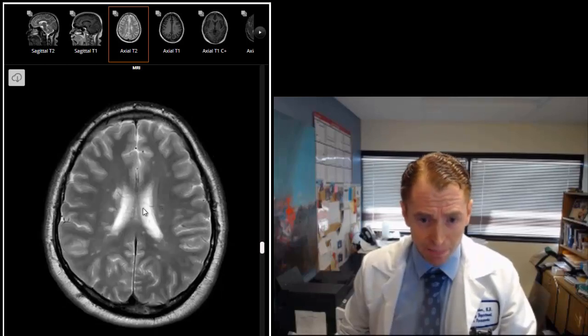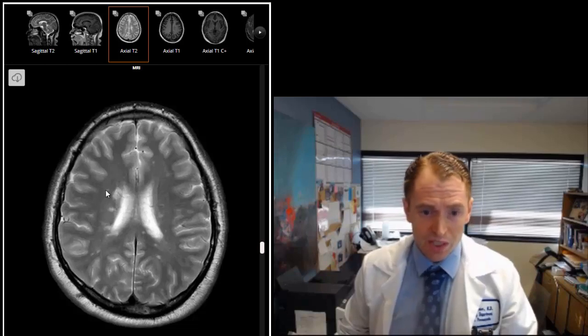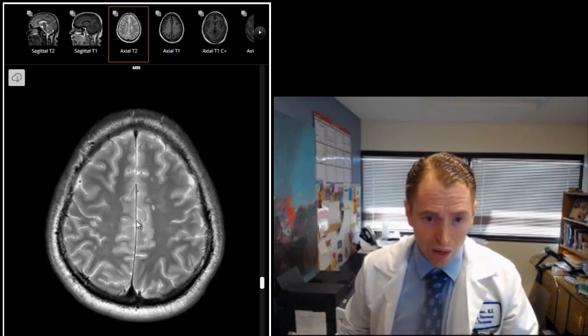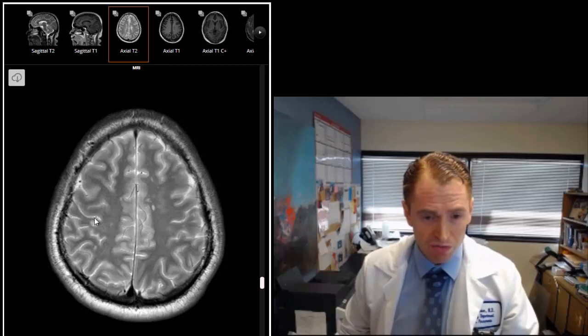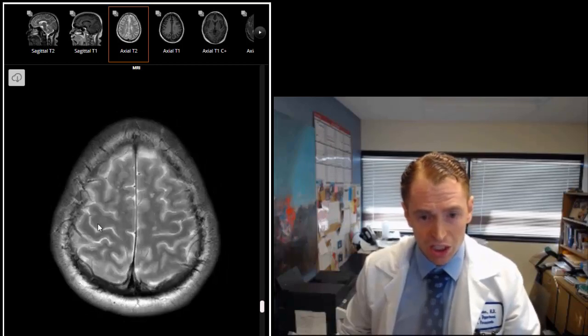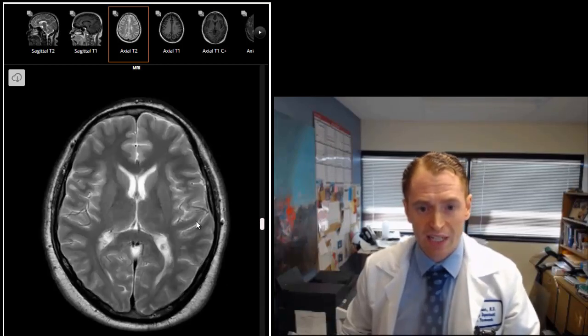We see a lot of lesions in the paraventricular area. These are Dawson's fingers. We see lesions in the subcortical white matter. We see some lesions right next to the cortex called juxtacortical lesions. These are all classic MS lesions.